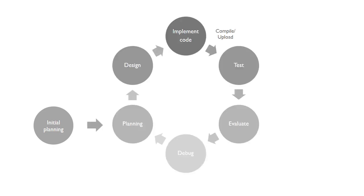The first stage of software development is the initial planning stage, where you get your specification — finding out from your boss or whoever what software you need to develop. You do your initial planning and jump into the development cycle, which is circular. After planning, you design the software, then implement the code — writing and compiling it. Once compiled, you can upload it onto your microcontroller or run it on a desktop PC and test the code, evaluating whether it meets your specification.